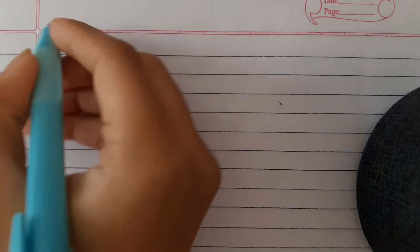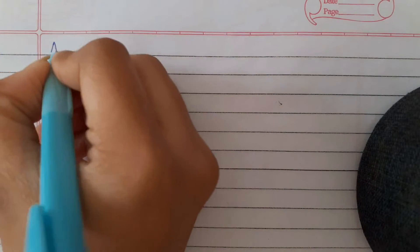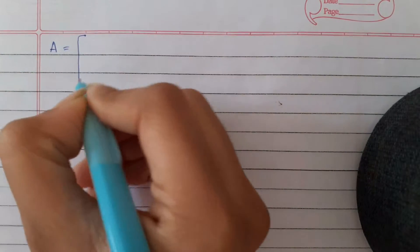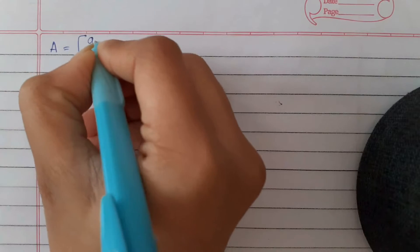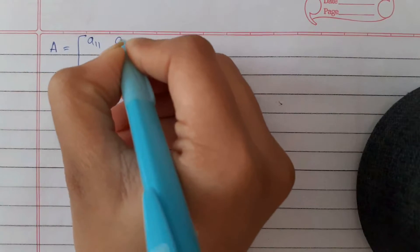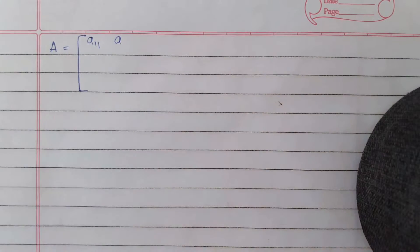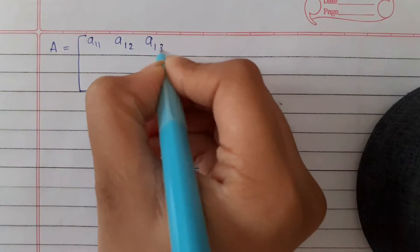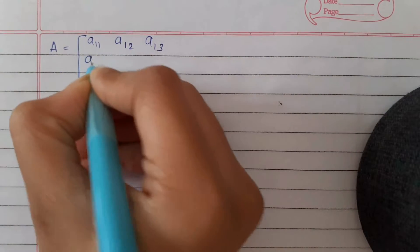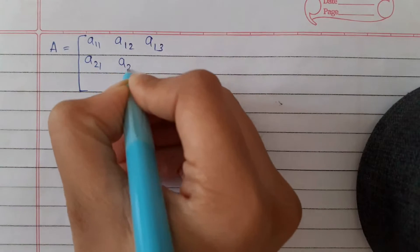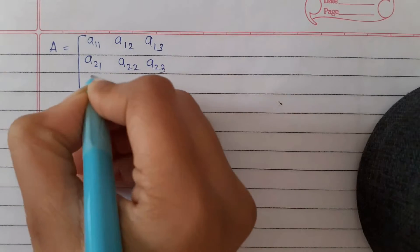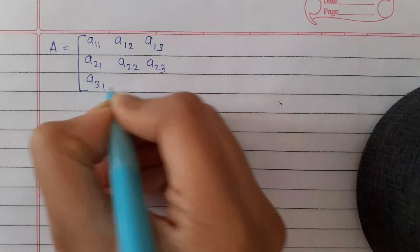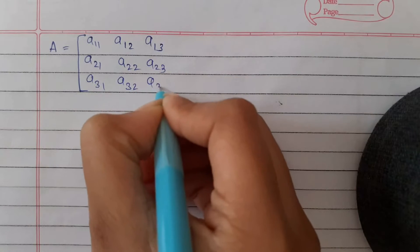Let us suppose any matrix A. The elements inside it will be A11, A12, A13, A21, A22, A23, A31, A32, A33.